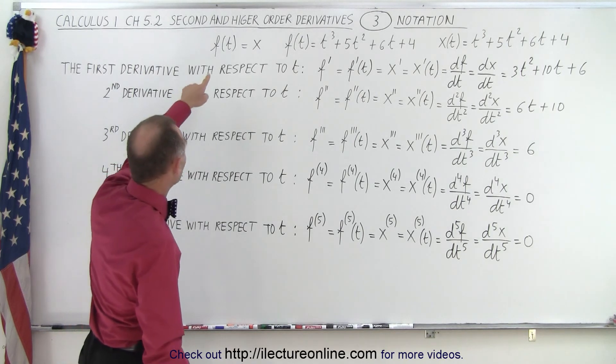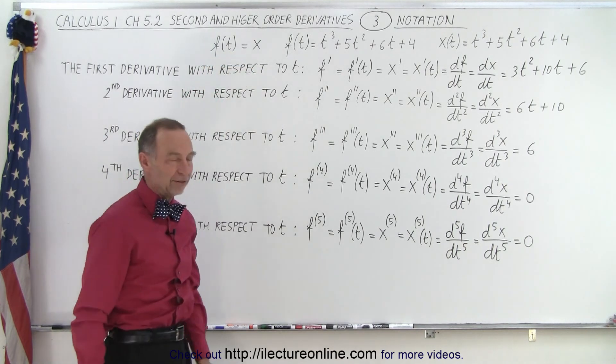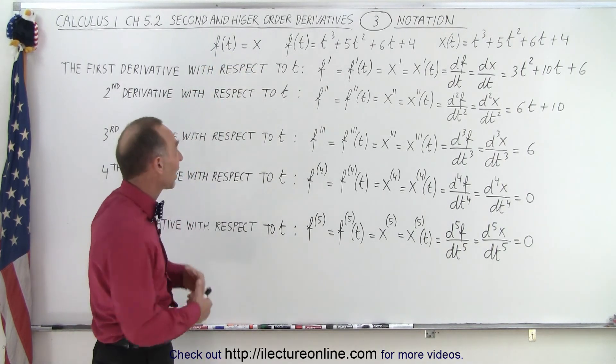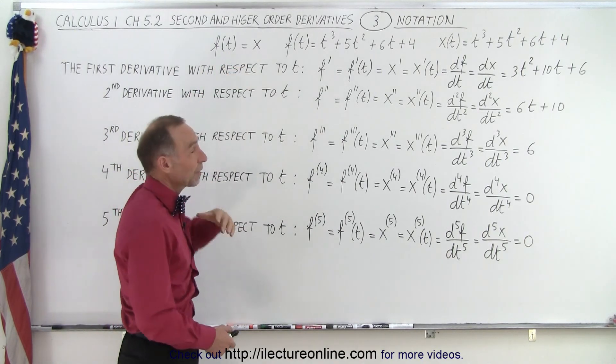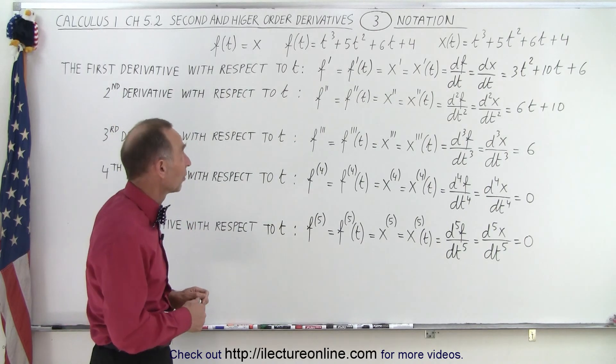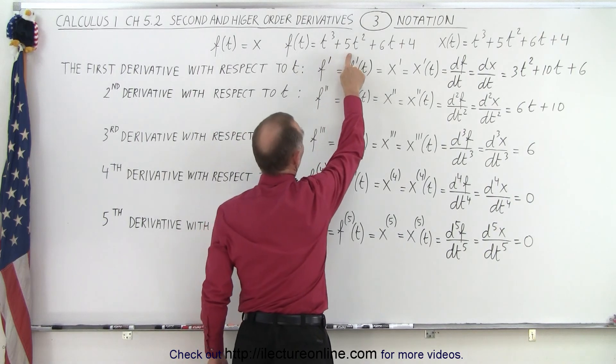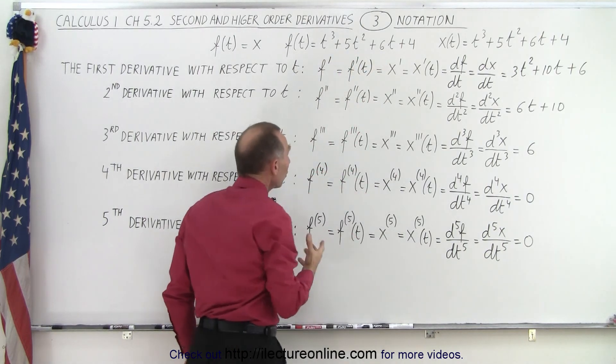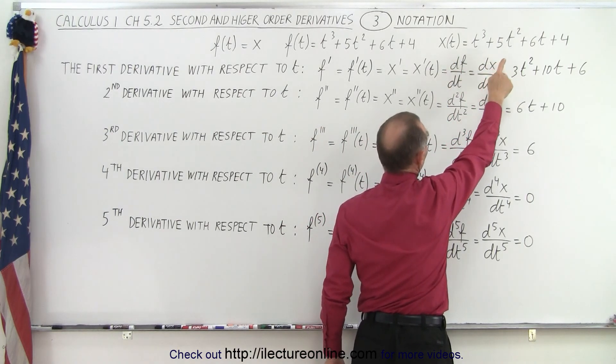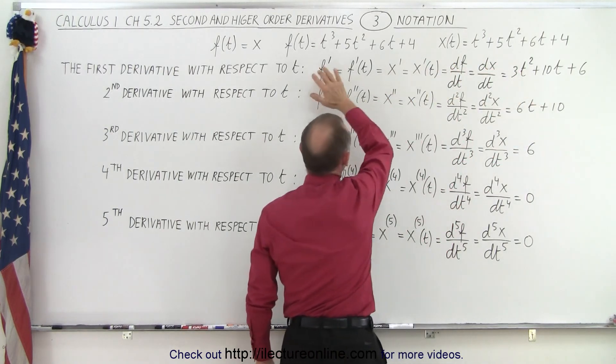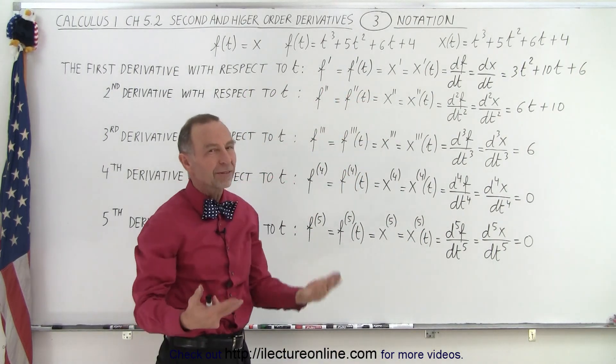So let's say we have a function, a function of the variable t and let's call the function x. So that's kind of the algebra notation. We have some function, we have an independent variable t and we call it x. Sometimes we call it y, we call it z, we call it something else. So the function with the variable t is equal to t³ plus 5t² plus 6t plus 4. Or we can also write it as x of the variable t is equal to t³ plus 5t² plus 6t plus 4. And those two are exactly the same. Here we call it a function, there we call it x. But it's the same thing.